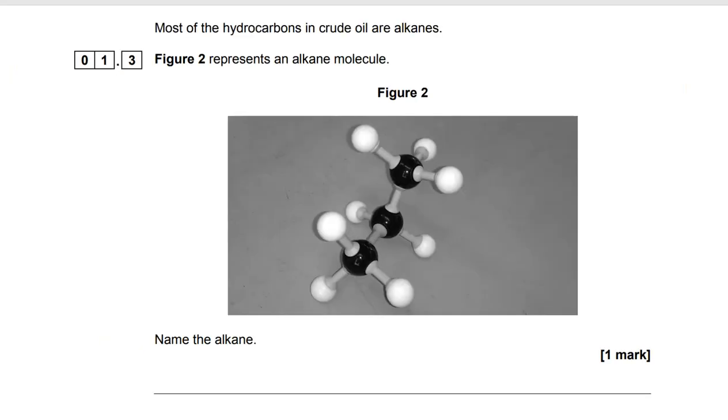We then move on to 1.3 and we've got an alkane built out of molymods. So to name the alkane, first of all, you need to count the carbons. And there are one, two, three of them. Hydrogen's coming off. Because there are three, that means the name is based on prop.